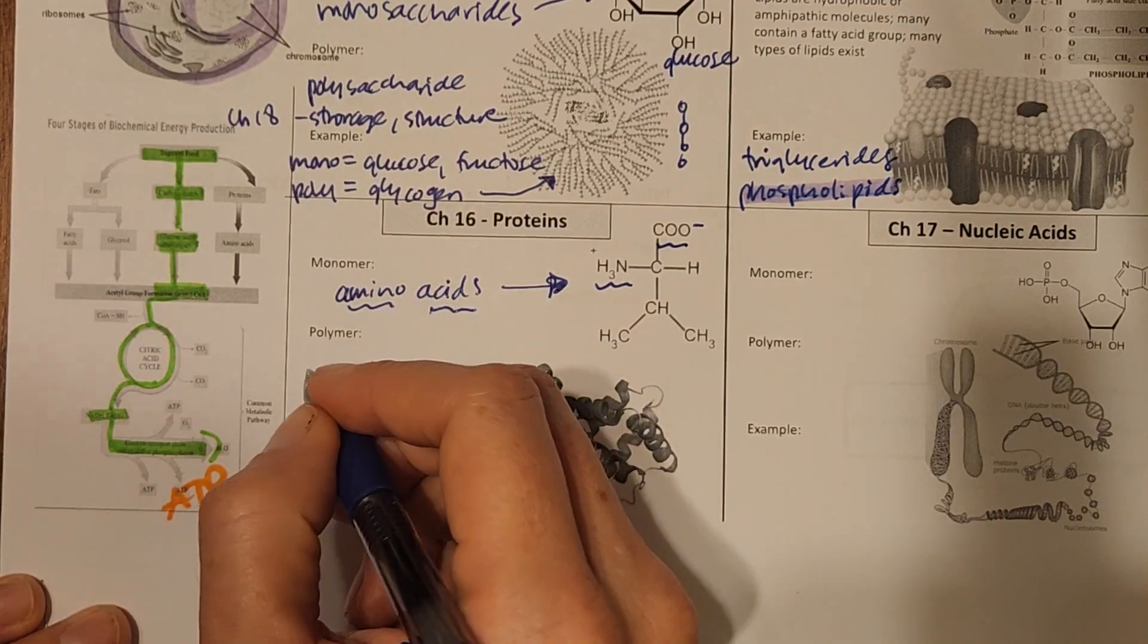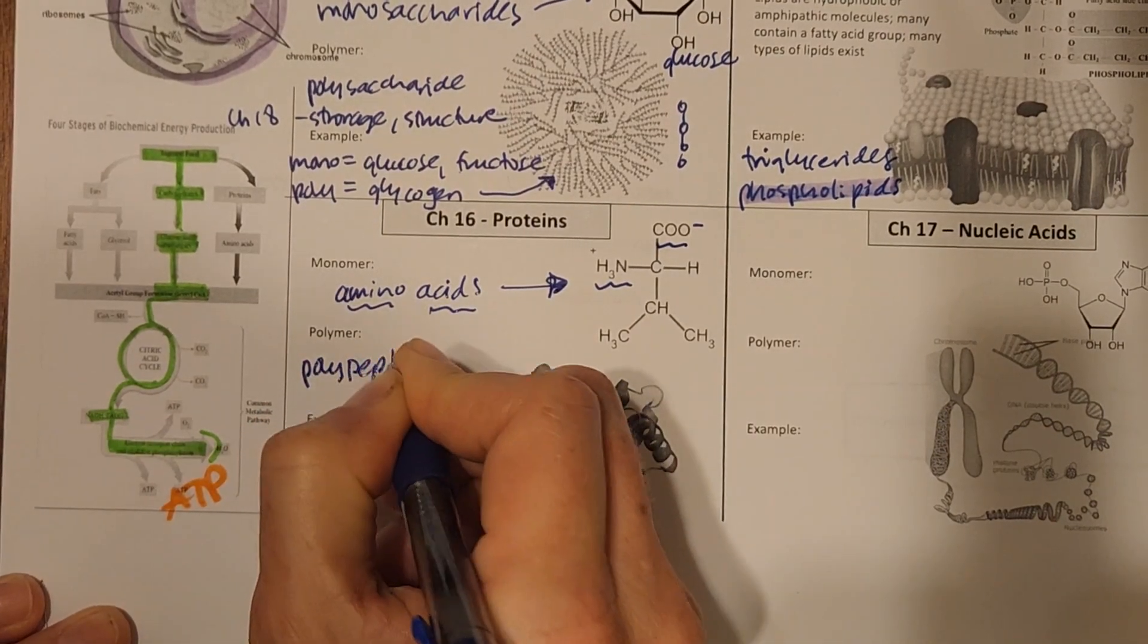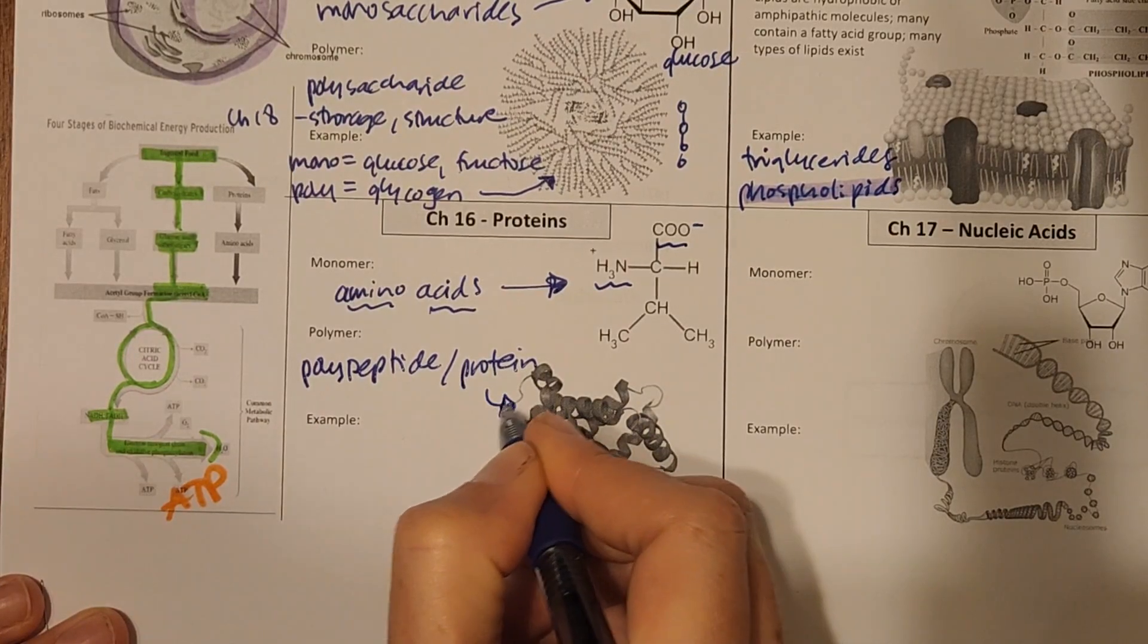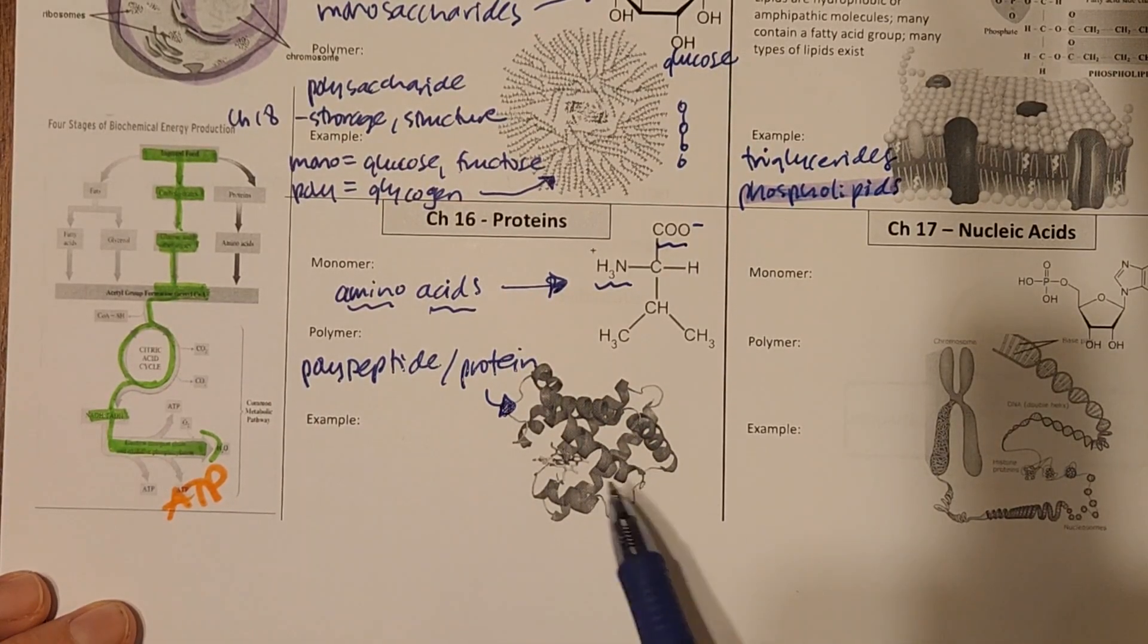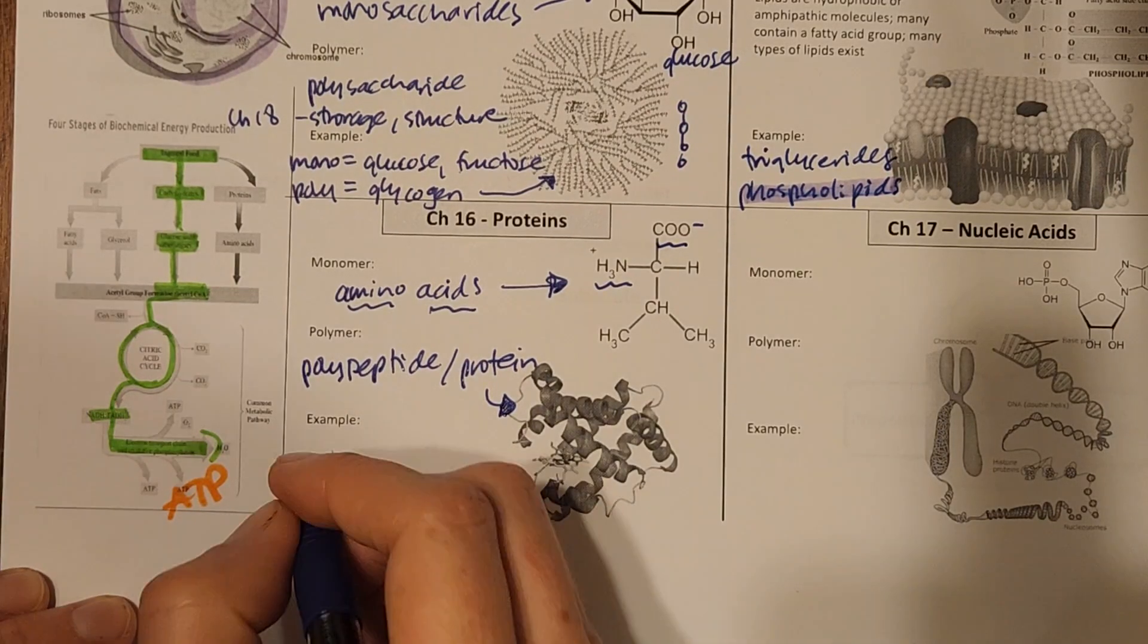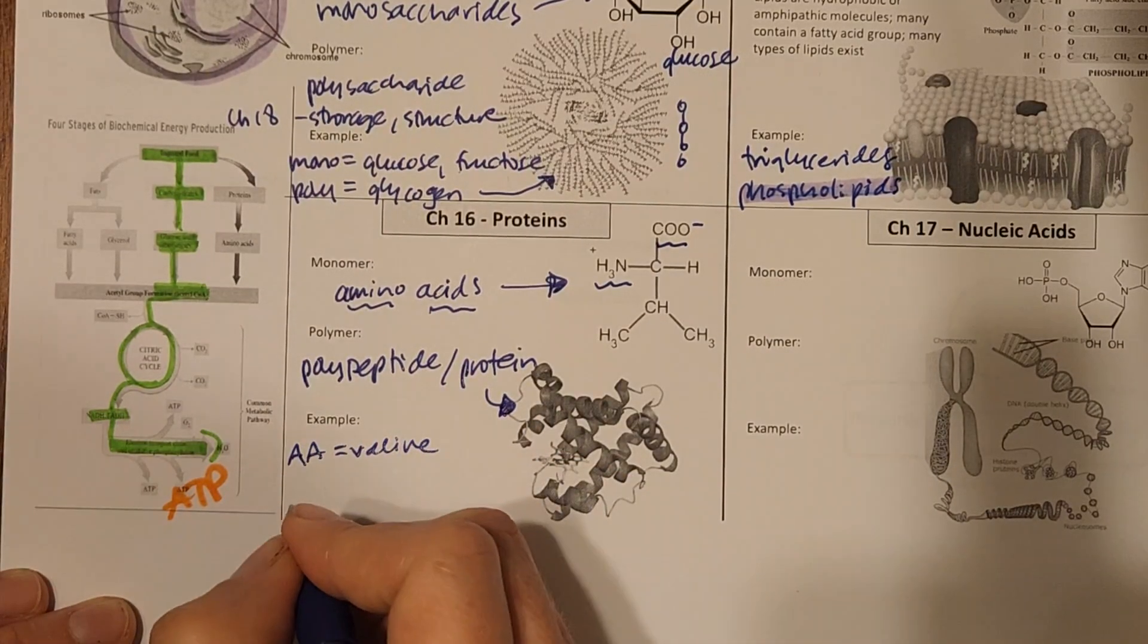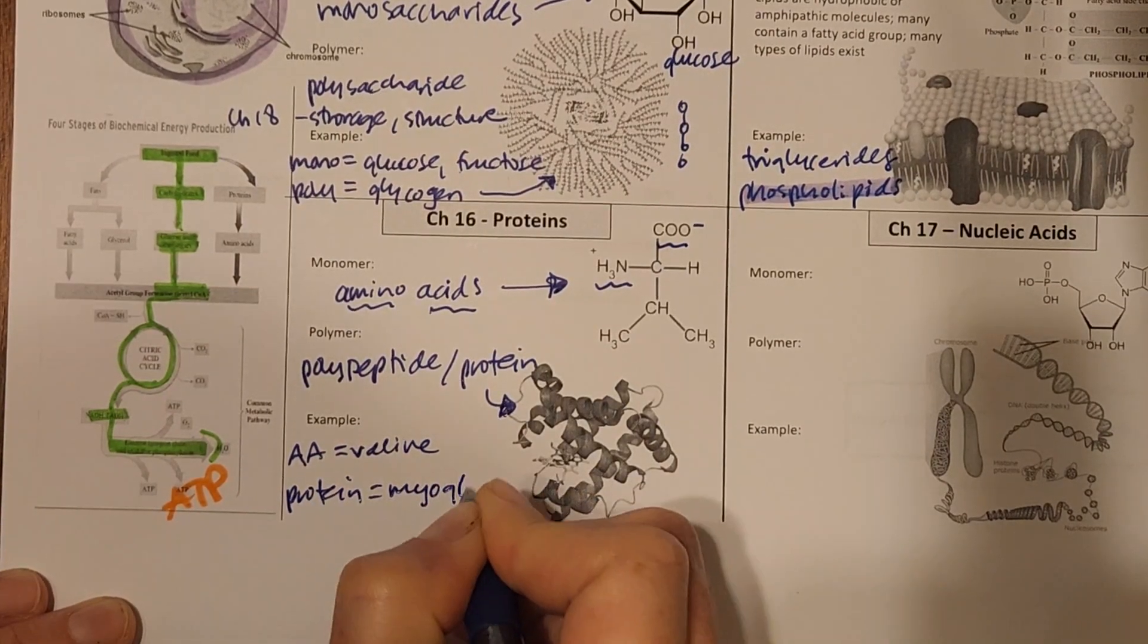When you string a bunch of amino acids together, you get what we call a polypeptide or a protein. And here is an example of a protein. If you've got the color version that has color to it, some purple ribbons. But if you don't, it's fine. We're just looking at what we call helices there. So examples, what we're looking at here, we're looking at the amino acid valine and the protein that we find in our muscles called myoglobin.